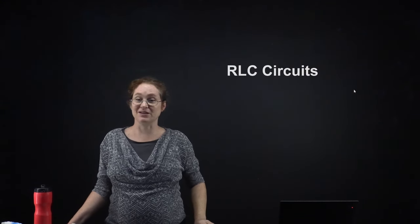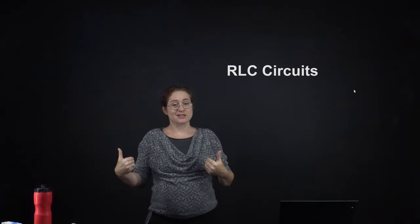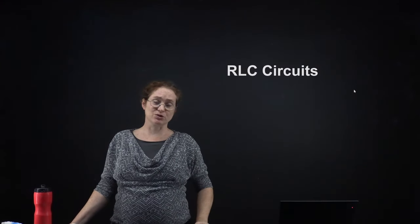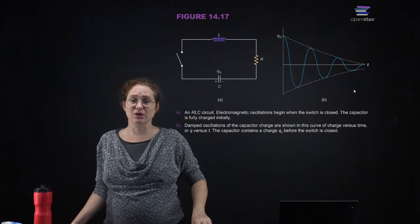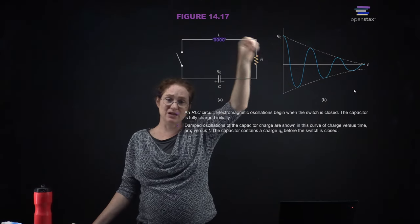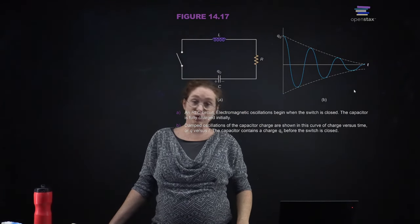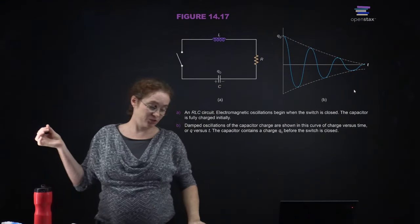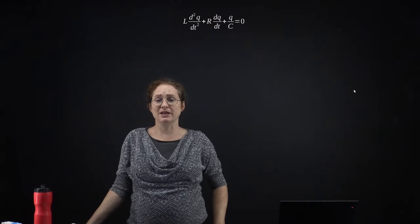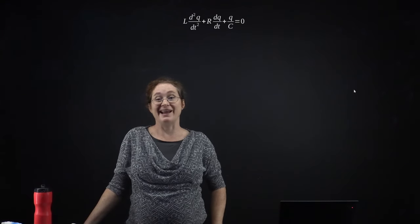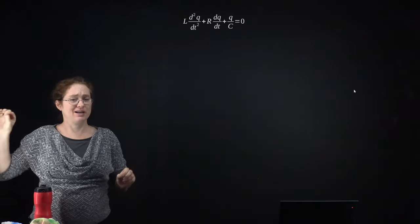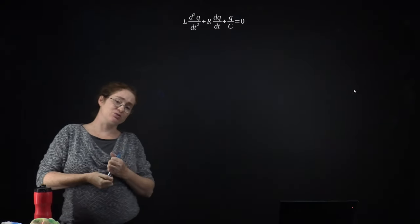An LC circuit, an RC circuit, and an LR circuit are all variations of an LRC circuit where one of those components is set to zero. An LRC circuit is one that has an inductor, a resistor, and a capacitor, and you can flip the battery on and off, or start applying an oscillatory potential. This is our coupled differential equation for an LRC circuit. The current is just the time derivative of charge, and the first derivative of current is the second derivative of charge. We're going to look at the charge rather than the current, because capacitance is related to total charge.